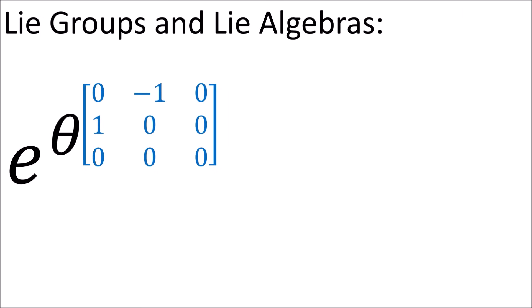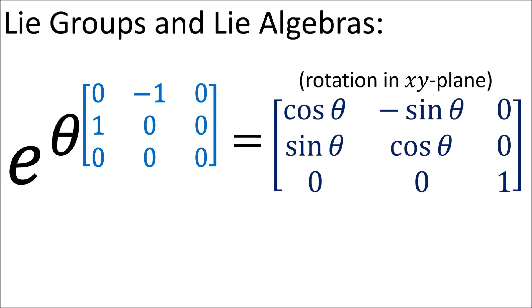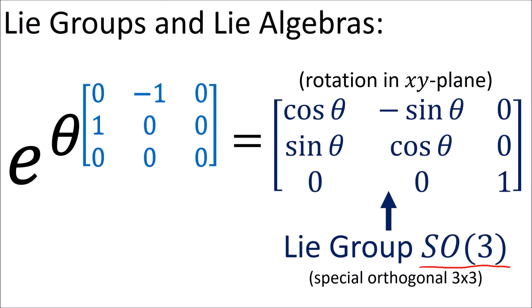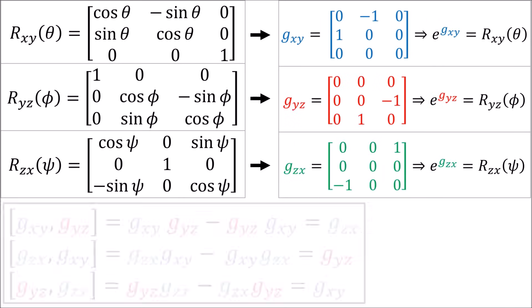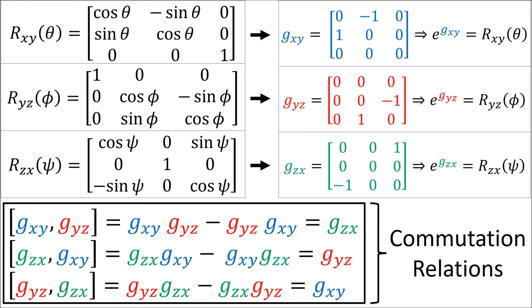If we exponentiate this 3x3 matrix here times theta, we get a rotation matrix in the xy-plane. We say that this rotation matrix is part of the Lie group SO(3), and this matrix we exponentiate is called a generator, and is part of the Lie algebra so(3). There are generators for all the 3x3 rotation matrices, and the generators follow special commutation relations, which is why they form a Lie algebra.